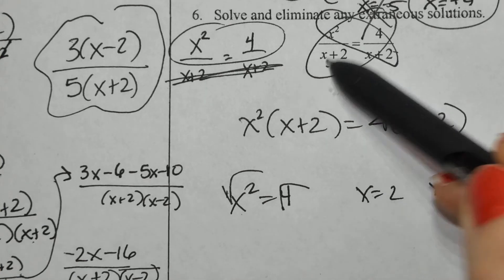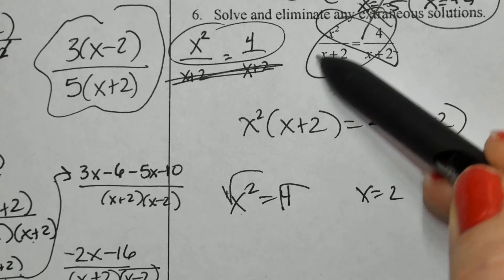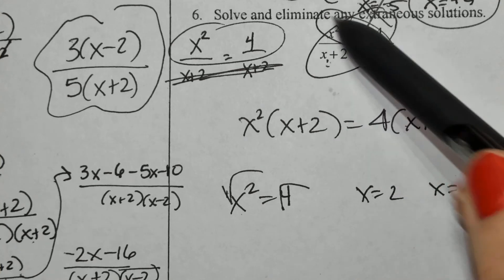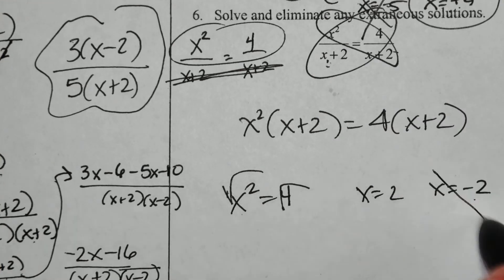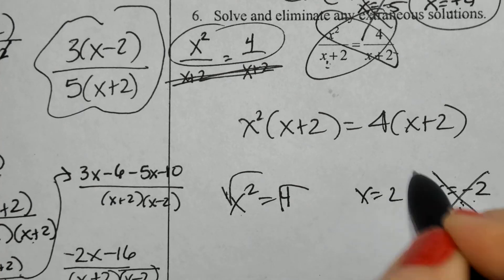But if I plug a negative 2 in for x, then this expression in the denominator now equals 0. We can't have 0 in the denominator. It would make it undefined. This is an extraneous solution. It's not the correct answer. My final answer is only positive 2.